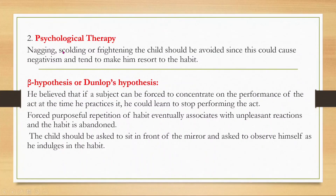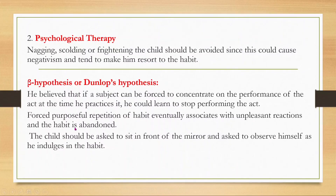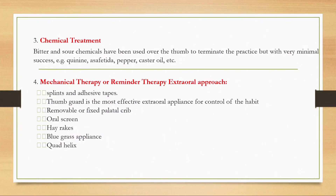In psychological therapy, nagging, scolding, or frightening the child should be avoided as this causes negativism. The beta hypothesis or Dunlop's hypothesis states that if a subject is forced to concentrate on performance of an act while practicing it, he can learn to stop — purposeful repetition eventually associates with unpleasant reactions and the habit is abandoned. The child should be asked to sit in front of a mirror and observe himself while engaging in the habit.